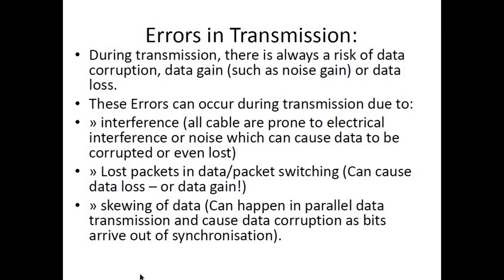Another reason for error is skewing of data, which happens in parallel data transmission. When sending data over multiple lines, the bits sent together don't always reach their destination at the same time and sometimes arrive out of order. This causes data corruption — for example, you sent 1011 and it is received as 1101, so the message is totally different from what was intended.